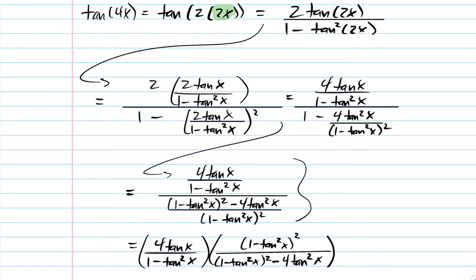You're going to make the first observation here. You see, I have a 1 minus tan squared x on the bottom, and we have two of these on the top, so right away we get cancellation here.